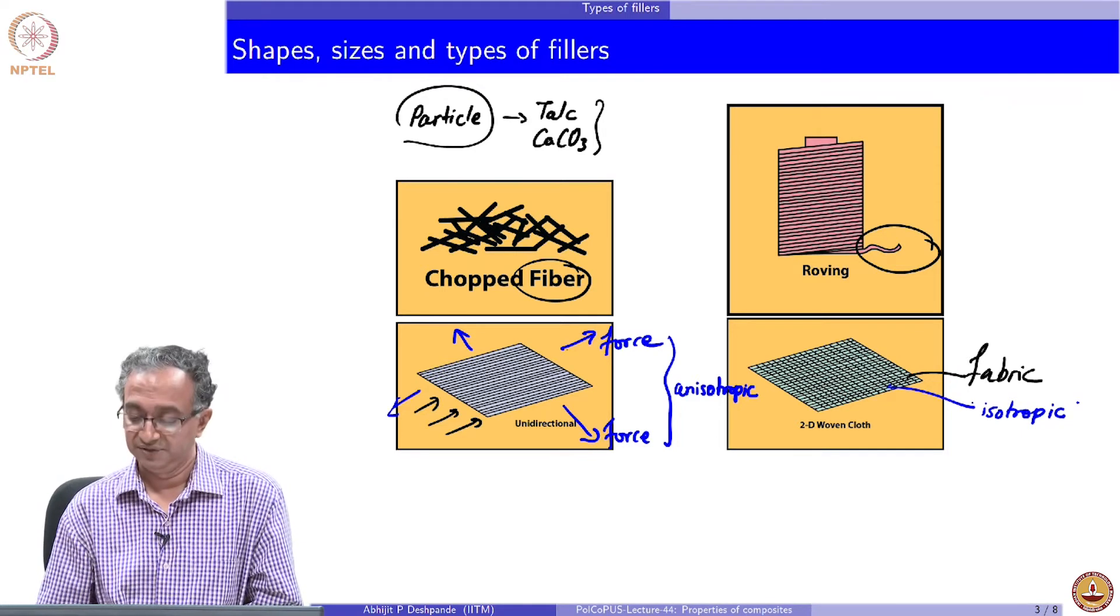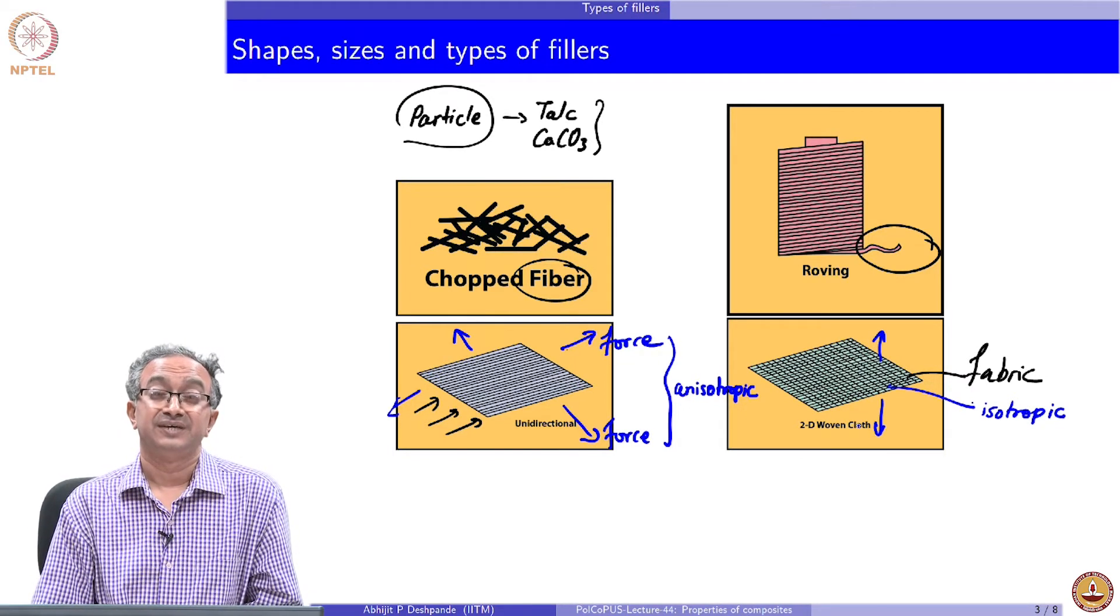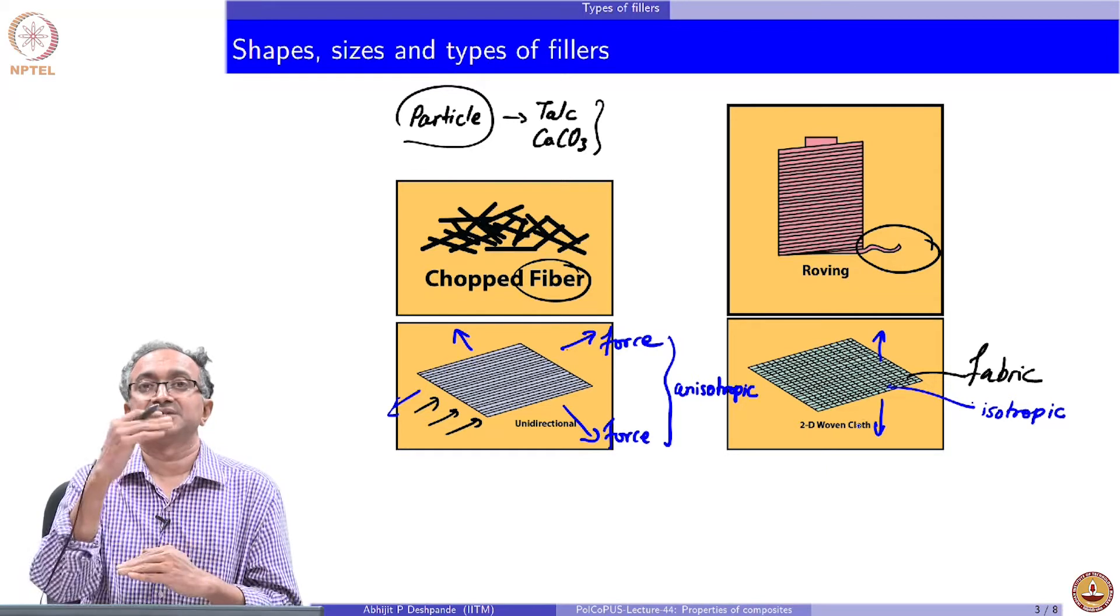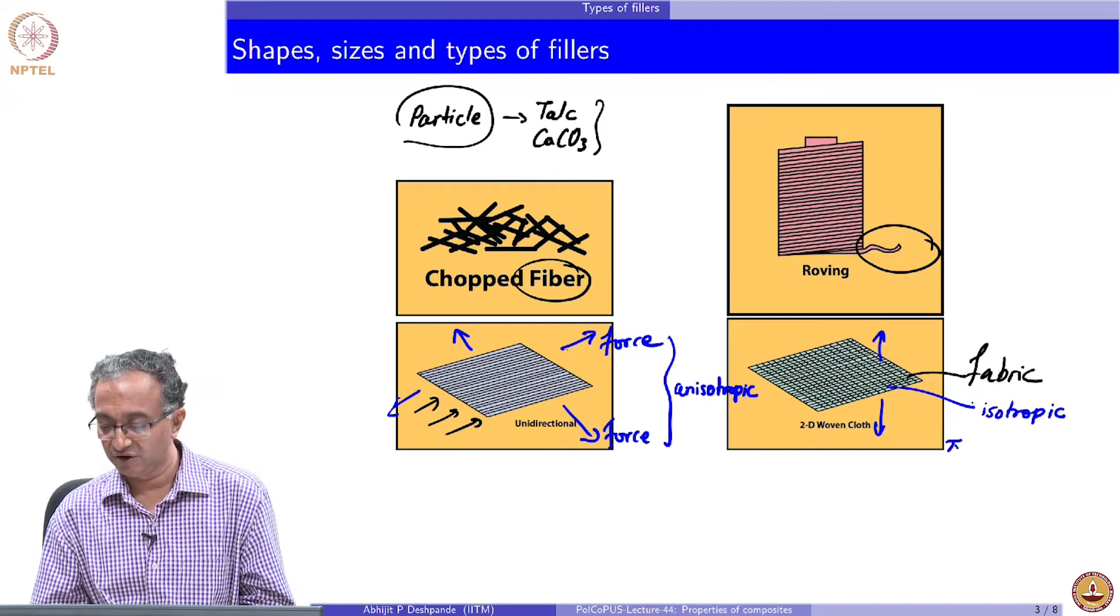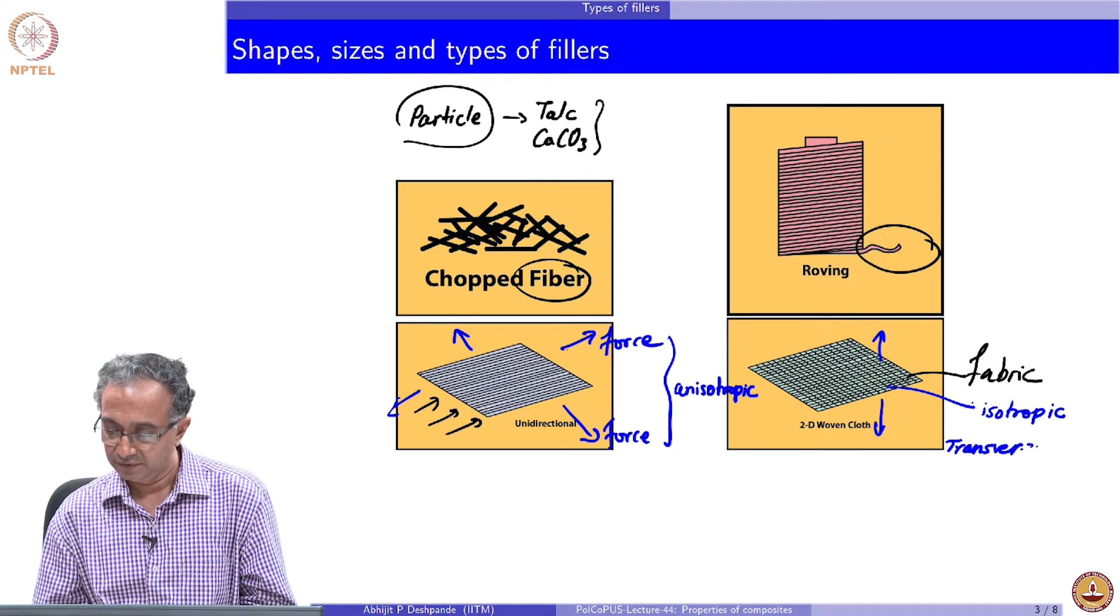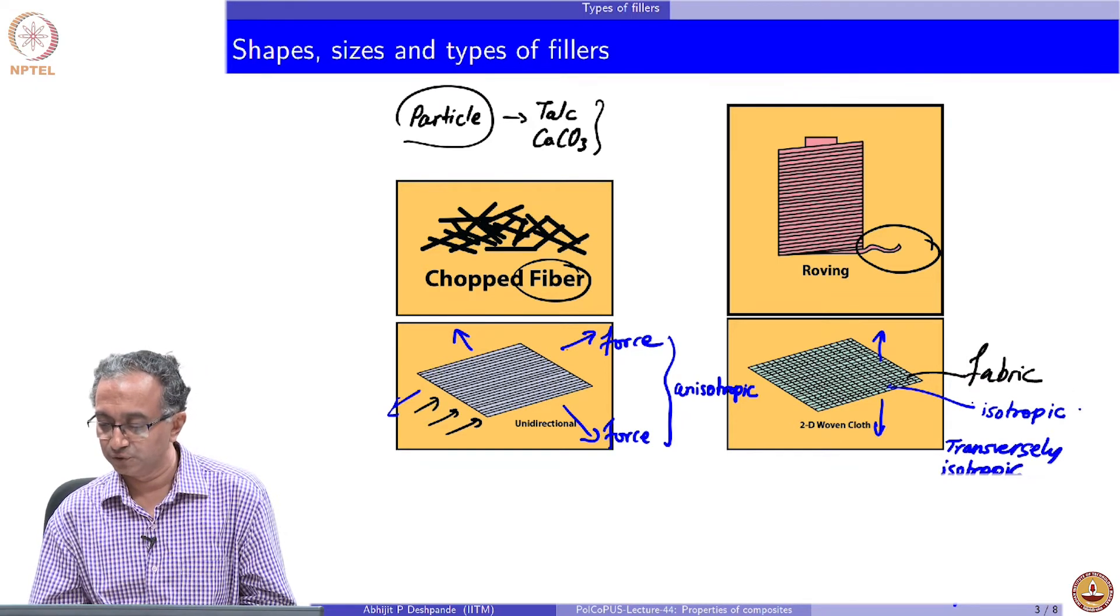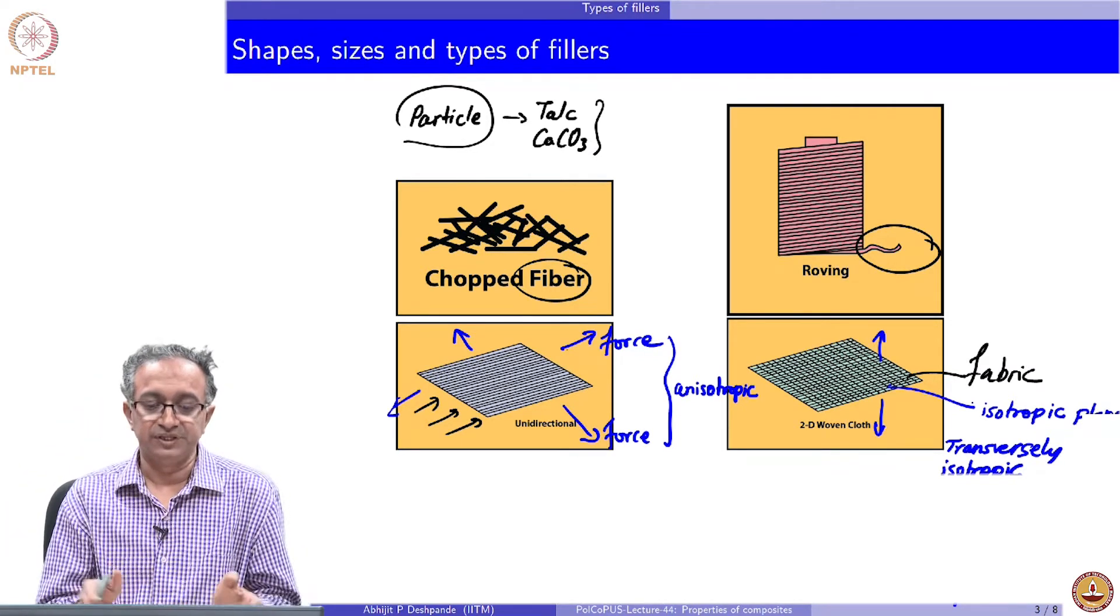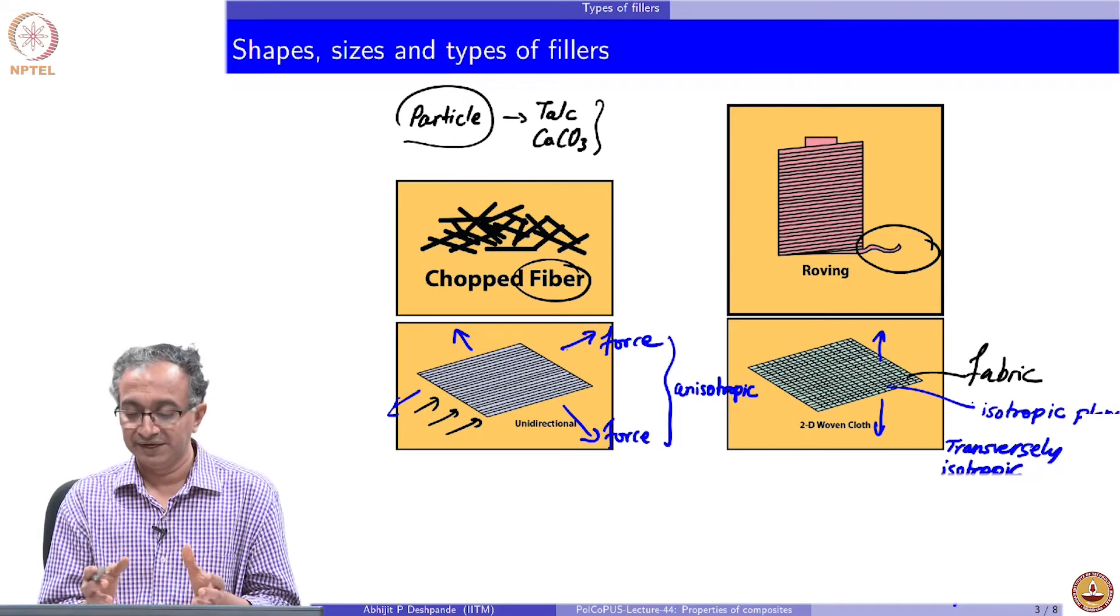Therefore, this is going to be an anisotropic material, while this will be isotropic. However, what about the thickness direction? If I were to ask you the question, what will be the property in this direction? You can see that since again fibers, if we stack different fabrics like this, the property in that direction is going to be different because there is no fiber which is going to be oriented in that direction. These materials are called transversely isotropic, because they are isotropic in the plane alone, not in the thickness direction.